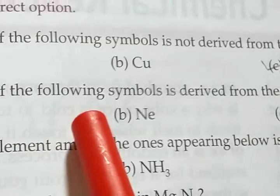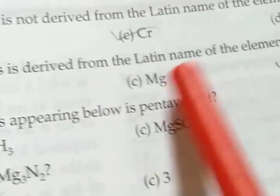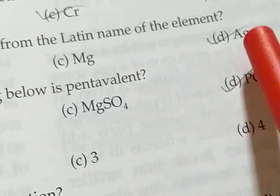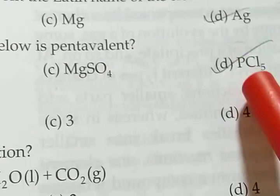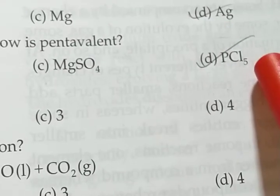Which of the following symbols is derived from the Latin name of the element? The answer is argentum, Ag. Which element among the ones appearing below is pentavalent? There are four options but the answer will be phosphorus pentachloride.